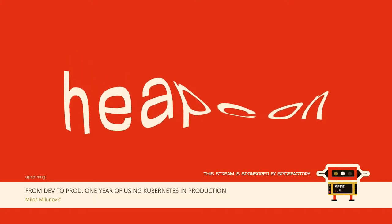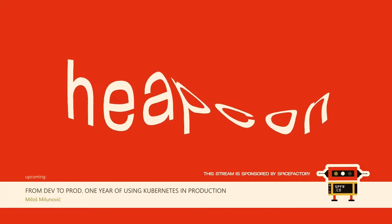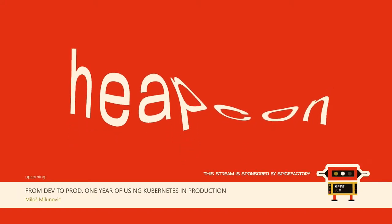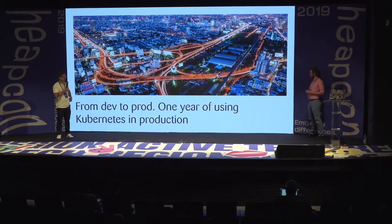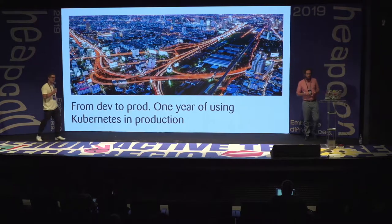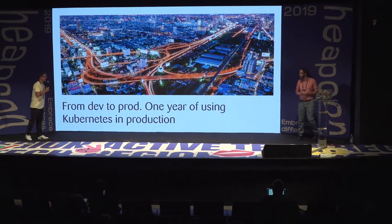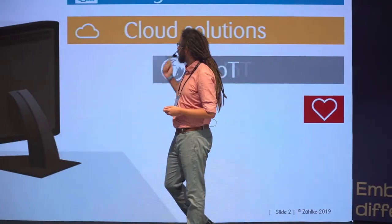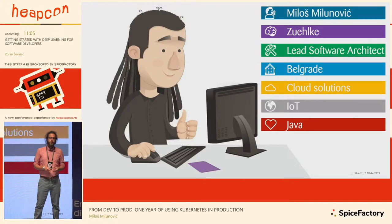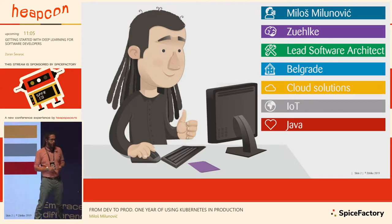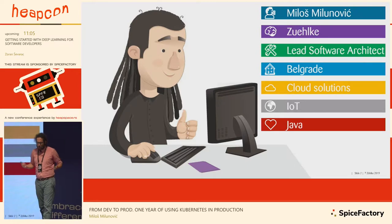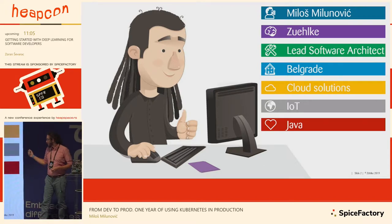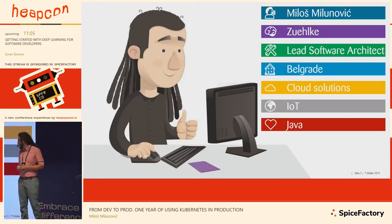Welcome back. At this moment is Miloš Milović, the lead software architect at Zulke Group, working here in Belgrade. He spent the last three years developing different solutions in IoT and cloud. He will be talking about the process between development and going into production and all its complexities. My name is Miloš, I work for Talking Engineering here in Belgrade. In my heart I'm still a Java developer, but considering Dave's presentation earlier, I might want to remove that from my CV.